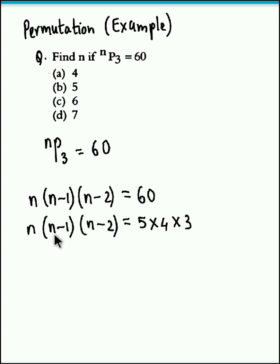...the left hand side here we have three factors with a difference of 1. Here also we have three factors with a difference of 1. Here the terms are in descending order. Here as well the terms are in descending order. So we have the same kind of arrangement on both the sides, so therefore we could easily obtain the value for n by comparison.